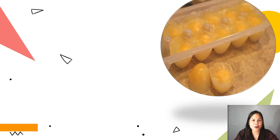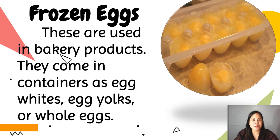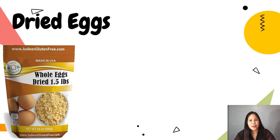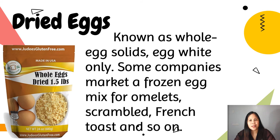The second market form is frozen eggs, used in bakery products. They come in containers as egg whites, egg yolks, or whole eggs. Frozen eggs are made of high-quality fresh eggs and are pasteurized. They must be thawed before use. Next are dried eggs, known as whole egg solids or egg whites only. Some companies market a frozen egg mix for omelets, scrambled eggs, french toast, and so on. Dried eggs are used primarily as ingredients in the food industry and are not commonly sold directly to consumers. Their whites are used for preparing meringue.